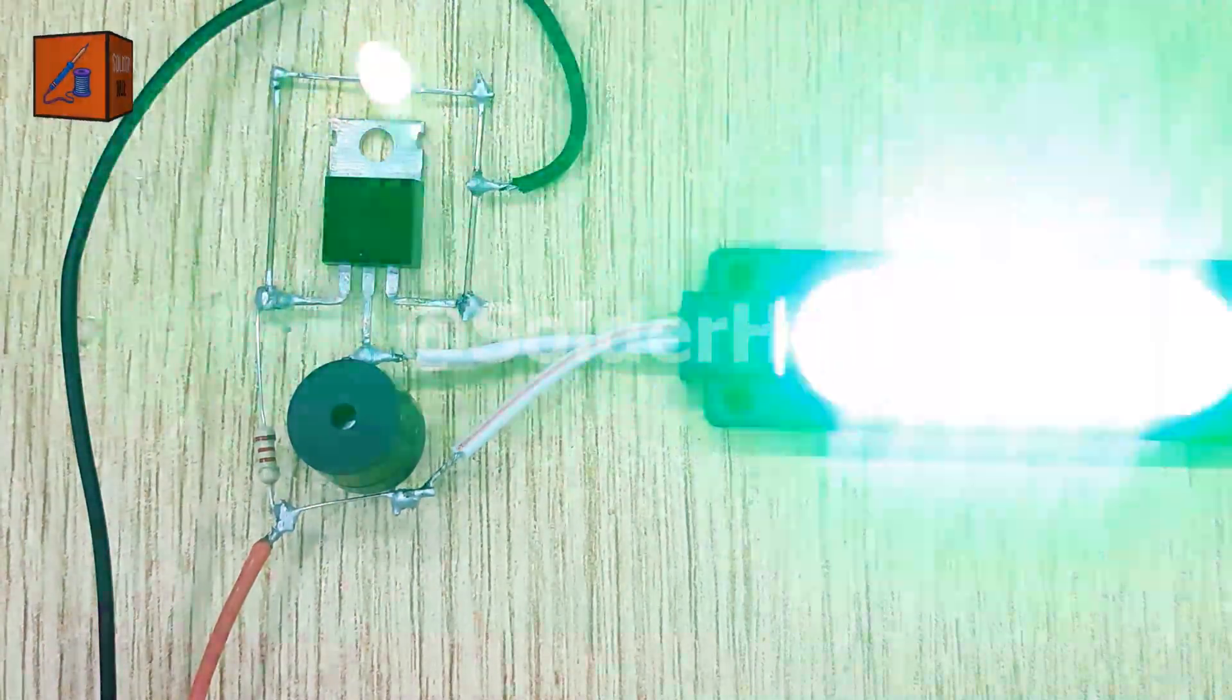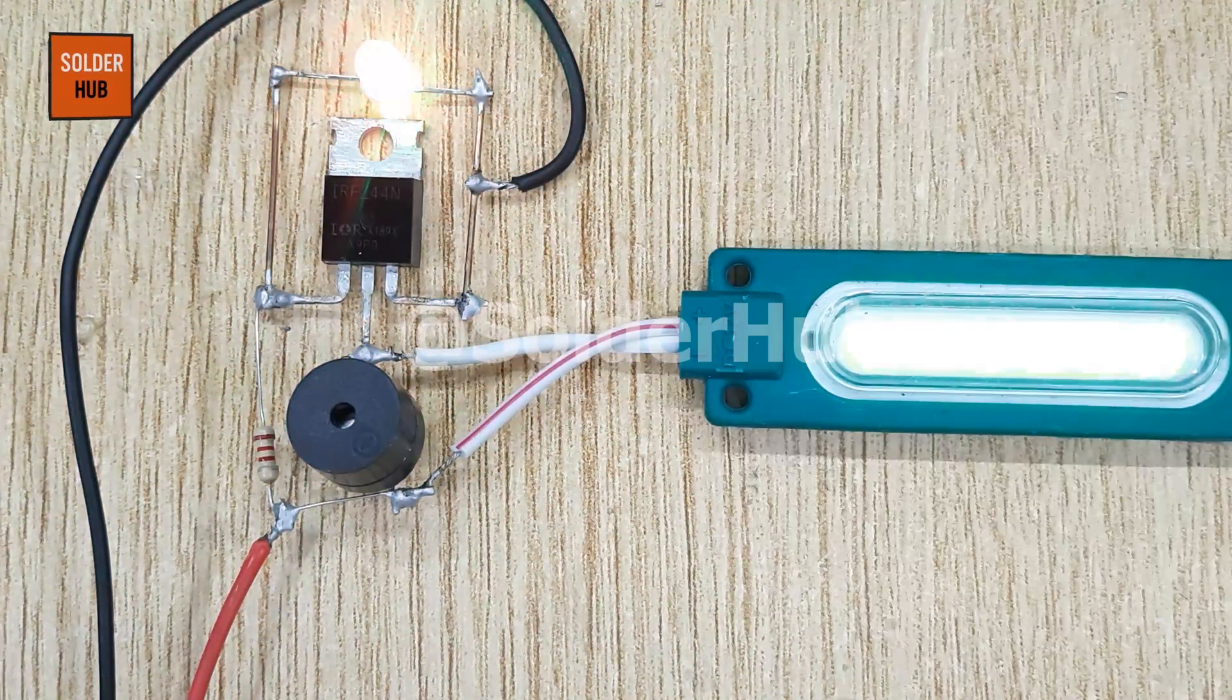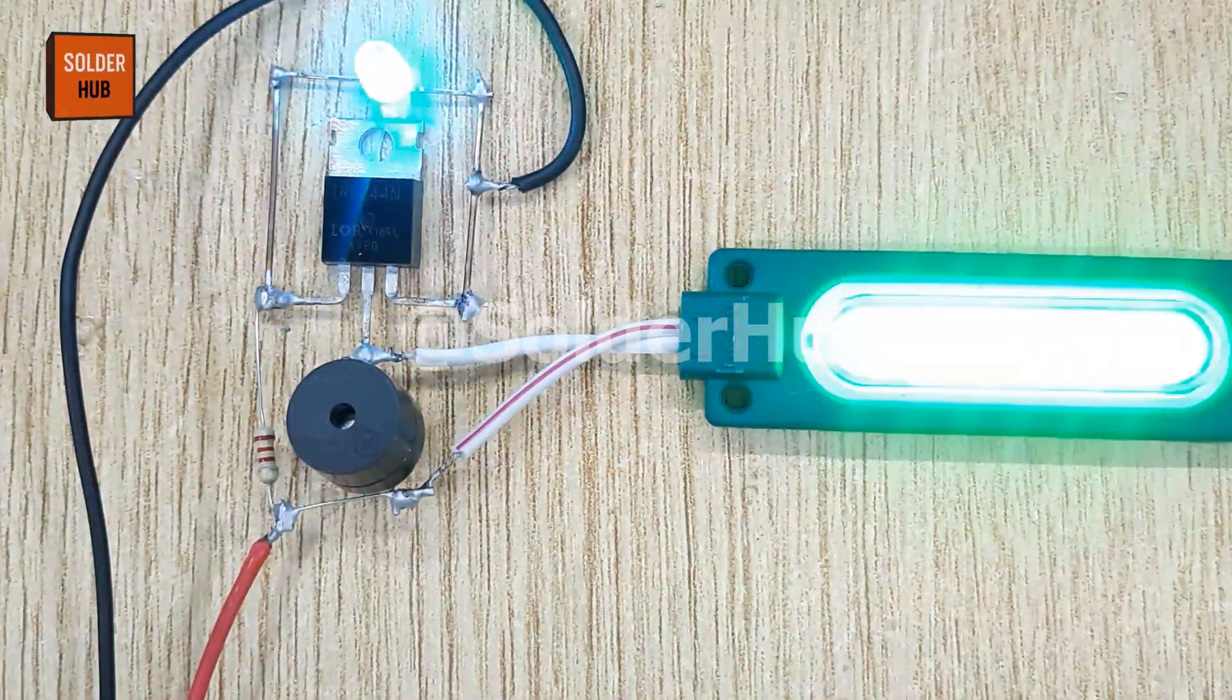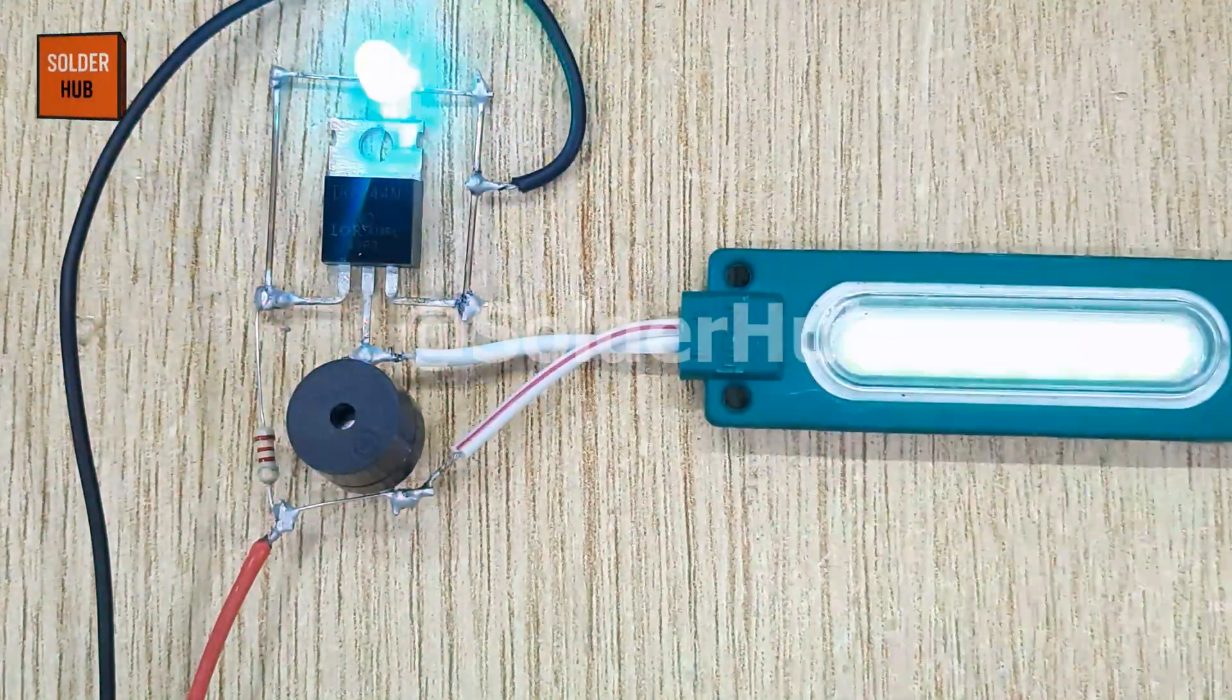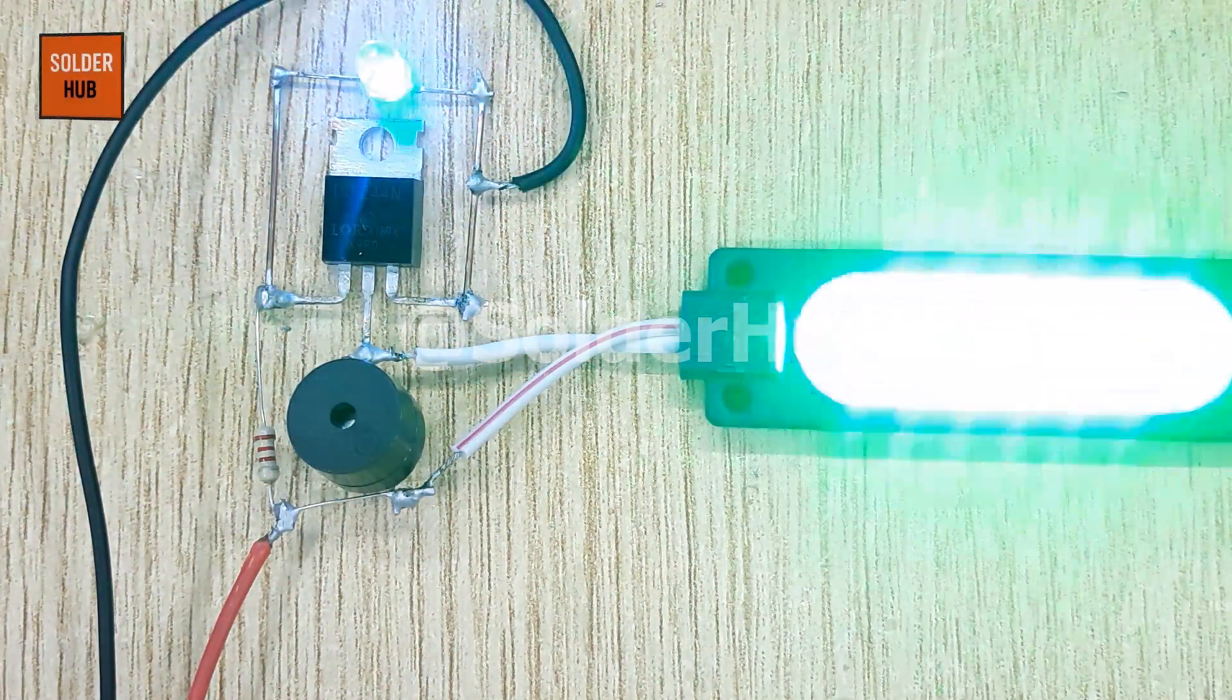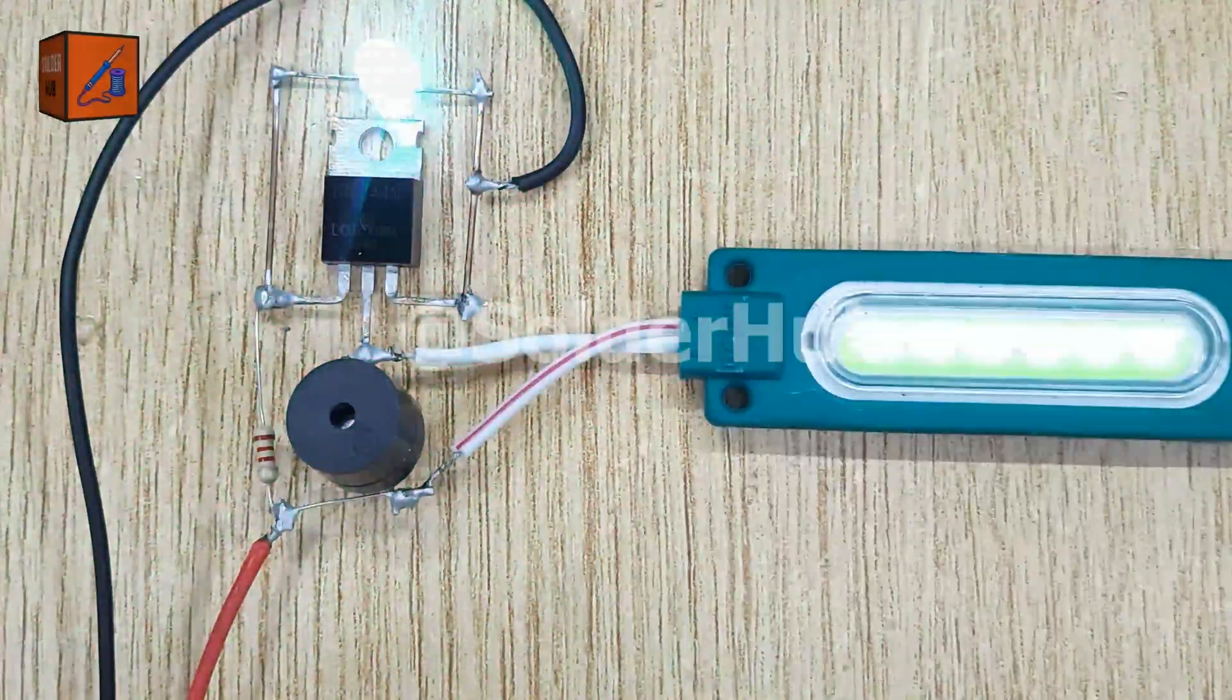The IRFZ44N MOSFET acts like an electronic switch. When voltage is applied to the gate pin through the blinking LED and resistor, it controls the current flowing between the drain and source. The 12-volt LED and buzzer connected at the drain are powered on and off rapidly, creating the strobe light and siren effect. The 7-color LED not only adds a beautiful visual touch, but also helps control the MOSFET gate activity.